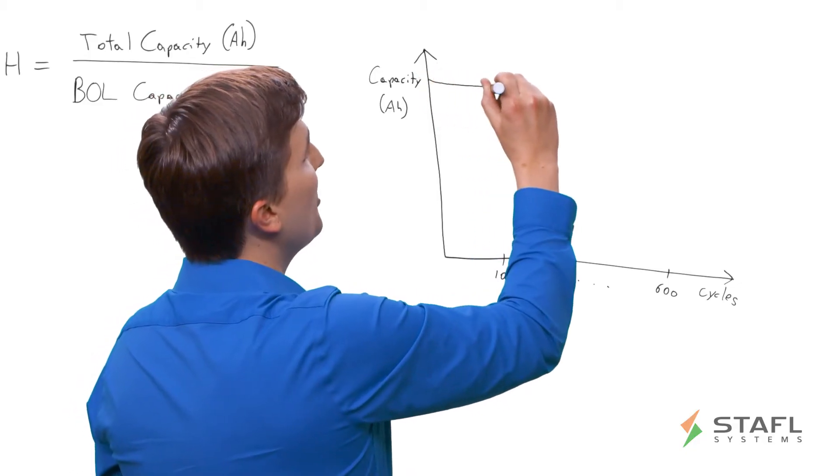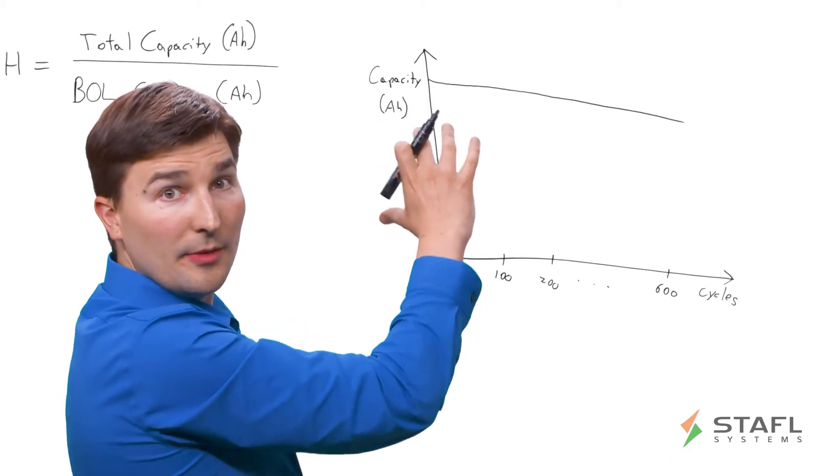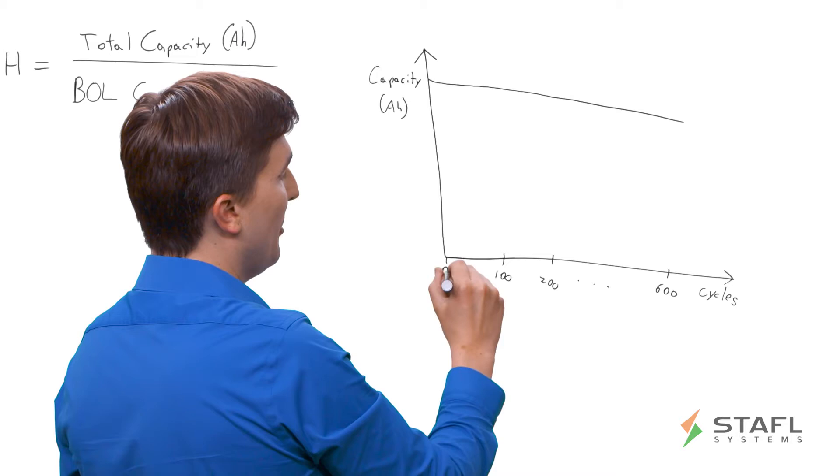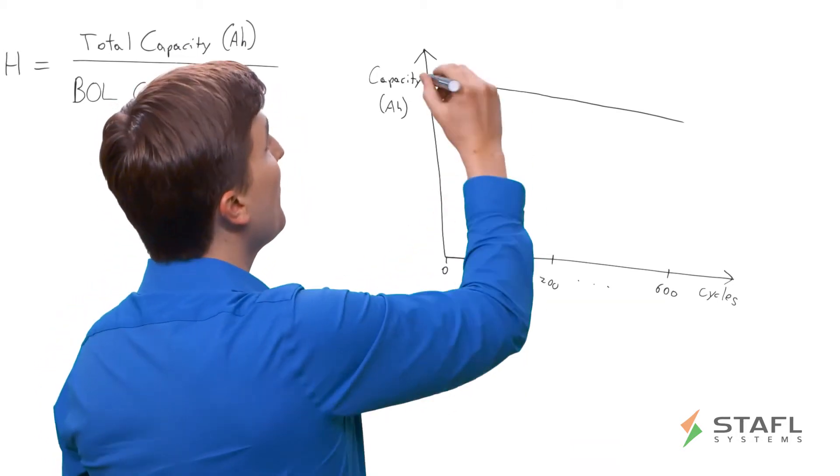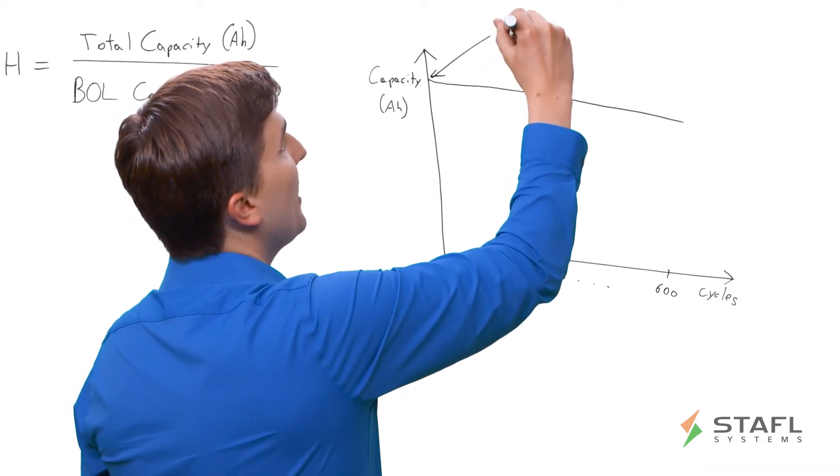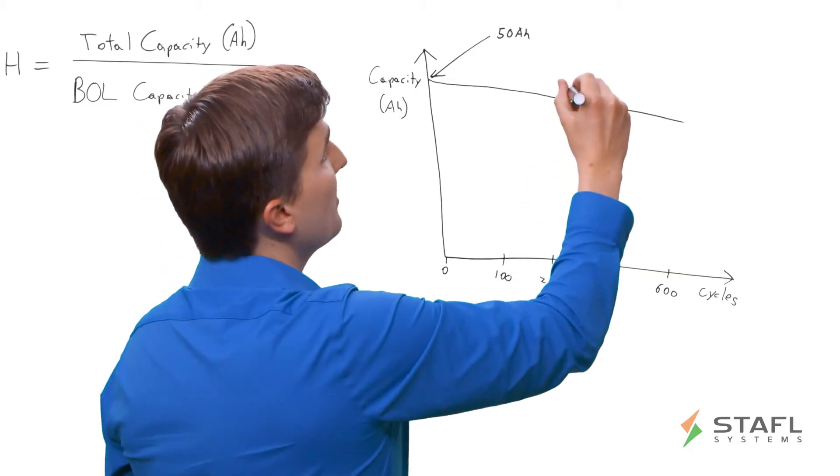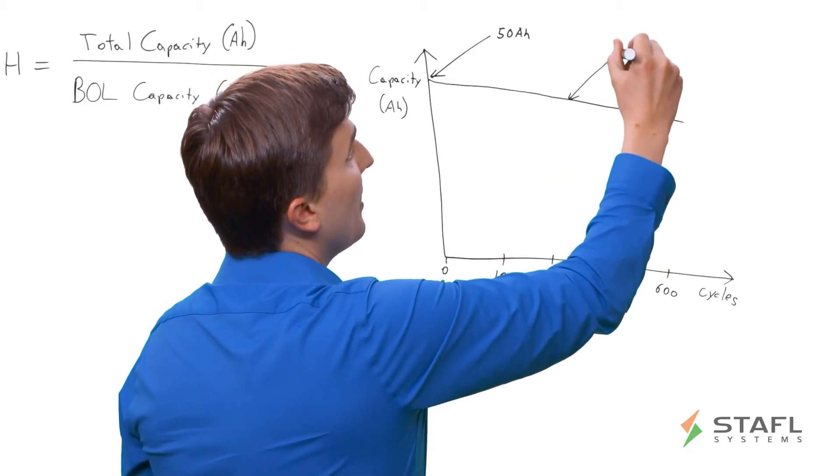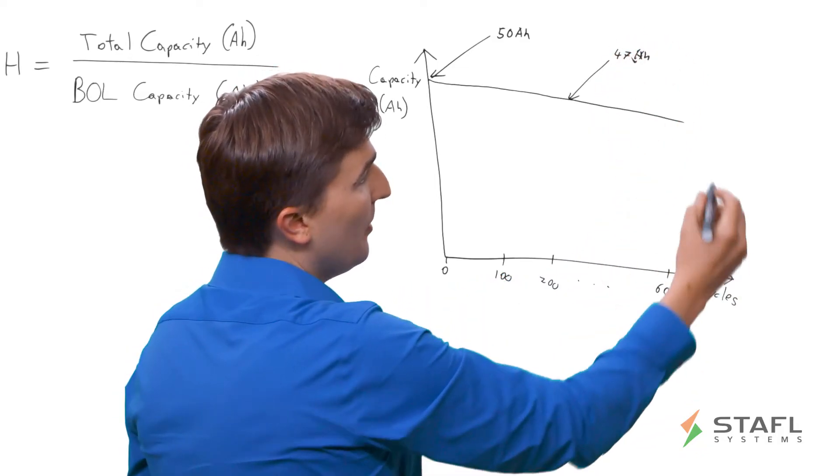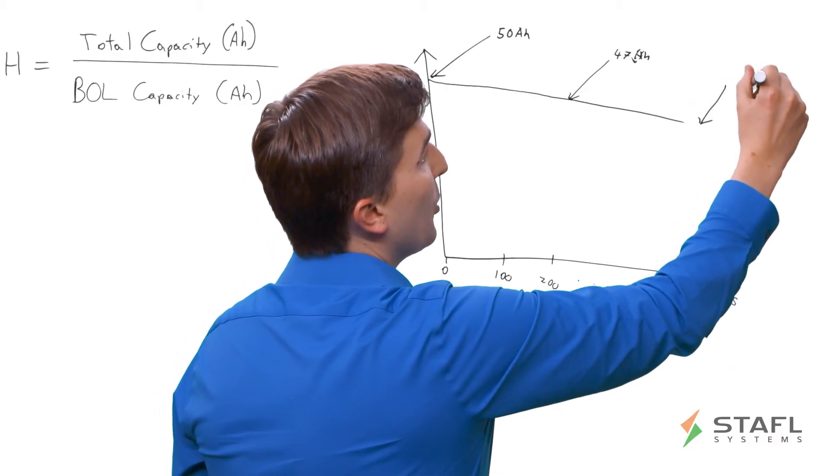But what do we mean by cycle life? Over time, as you charge and discharge a battery, generally speaking, the capacity of that battery pack will decrease over time. So, for example, when you initially purchased that battery pack and it had zero charge discharge cycles, this would have a capacity, say, of 50 amp hours. After maybe 200 charge discharge cycles, now maybe you see a capacity of 47 amp hours. And then maybe once you get to 600 cycles, you see a capacity of, say, 44 amp hours.